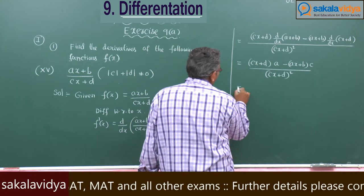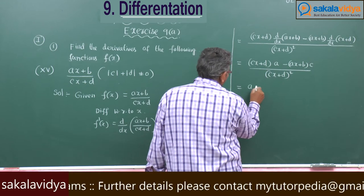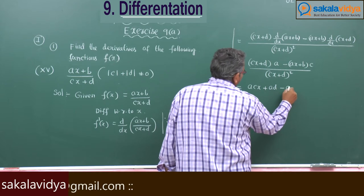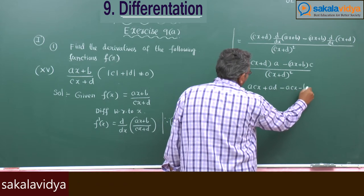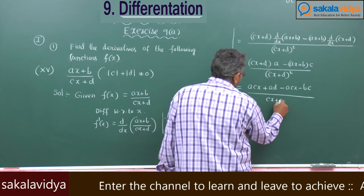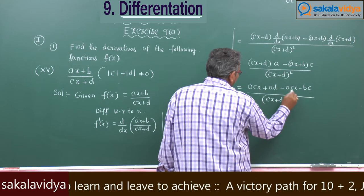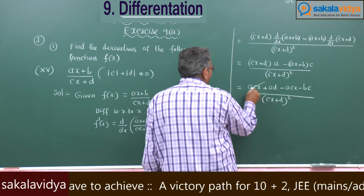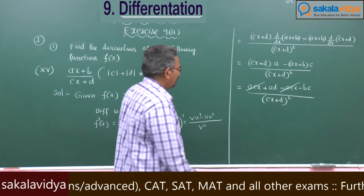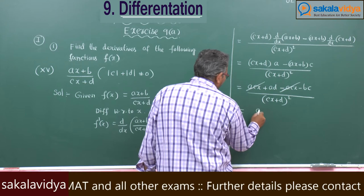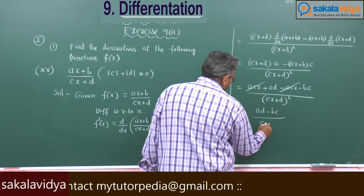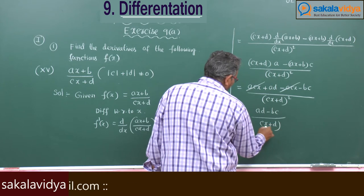Simplification: (acx + ad - acx - bc) / (cx + d)². The acx terms cancel, so we have f'(x) = (ad - bc) / (cx + d)².